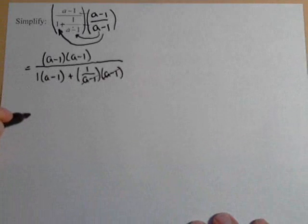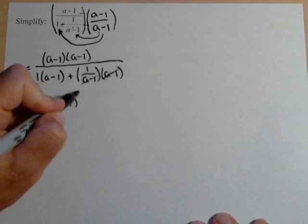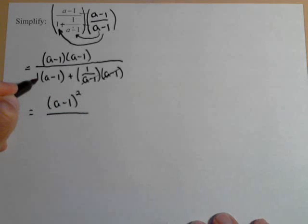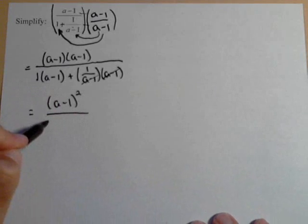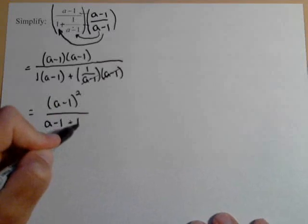So in the numerator, we're going to have a minus 1, the quantity squared, all over, now this is just 1 times, but if it was another number, we would distribute it over these parentheses, a minus 1, so we can drop those parentheses, plus 1.